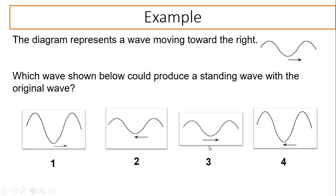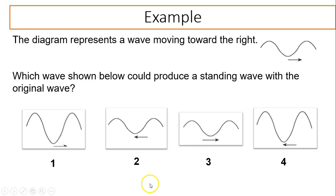Another example: The diagram represents a wave moving to the right. Which wave shown below could produce a standing wave with the original wave? To produce a standing wave, you must have the exact same wave — so it's not options one or four. The other condition is that the waves must move in opposite directions. So the answer is option two.